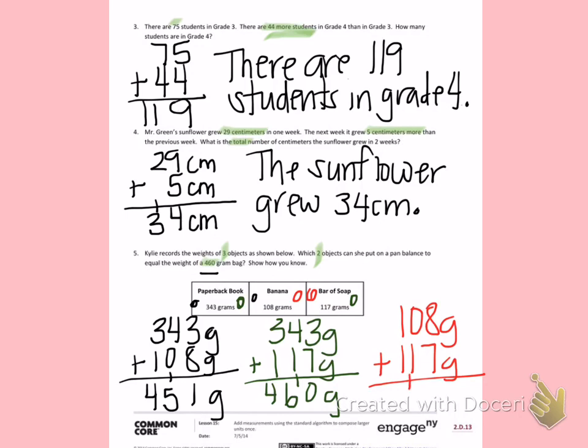8 plus 7 is 15, 1 plus 1 is 2, and 1 plus 1 is 2, giving me 225 grams.